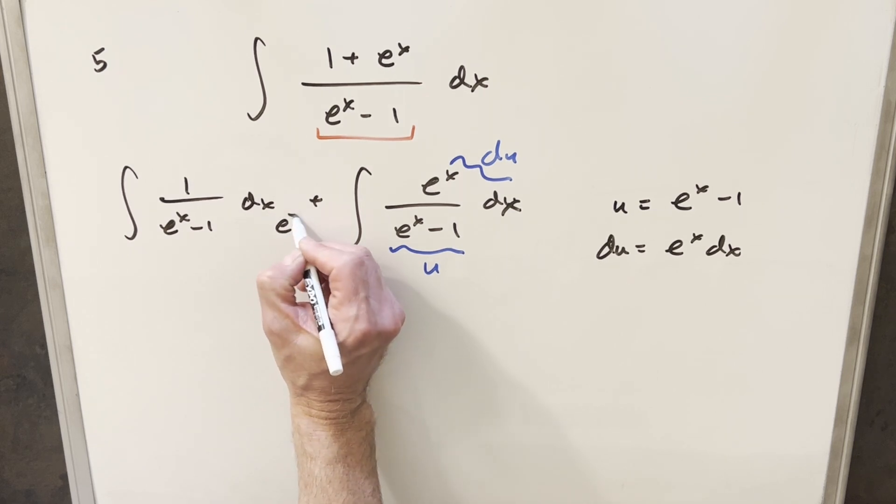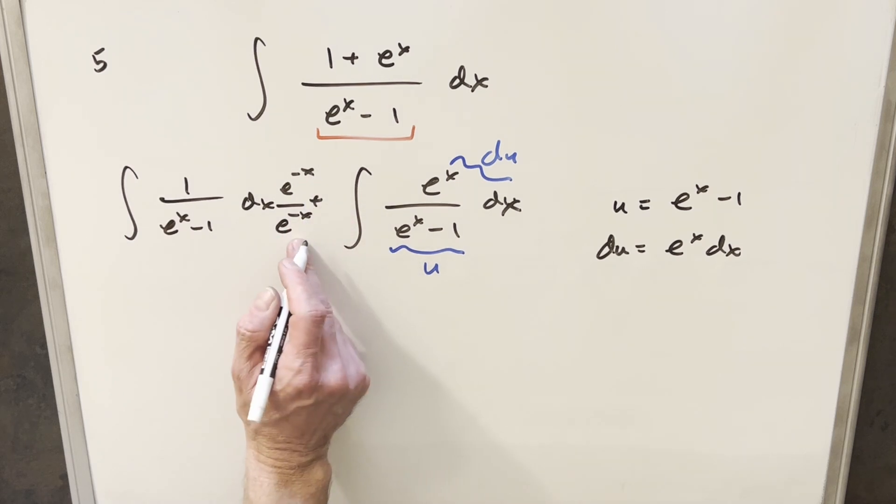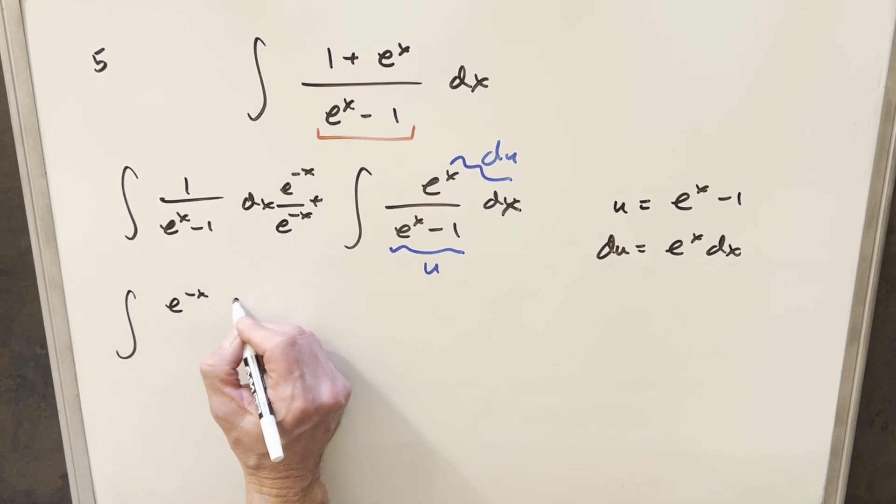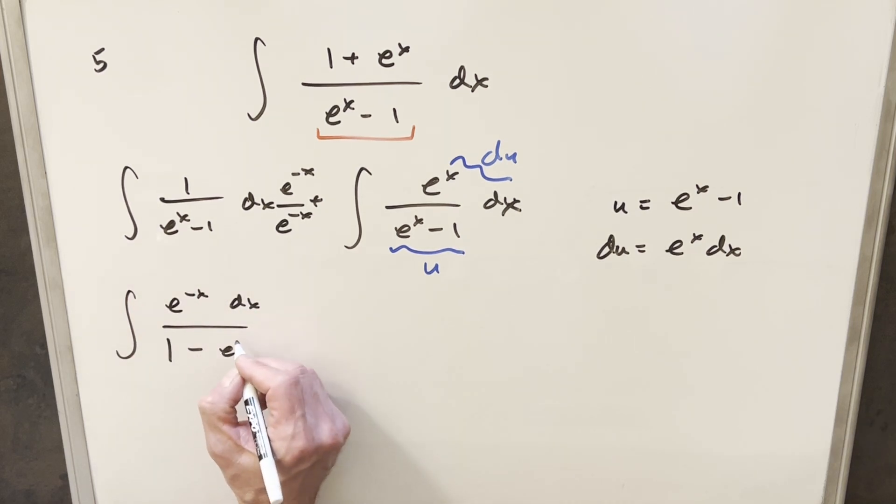What I'll do is if I just multiply by 1 by multiplying by e to the minus x over e to the minus x, let's see what happens here. So now we get something in the numerator. Multiplying e to the x times e to the minus x is 1 minus e minus x.